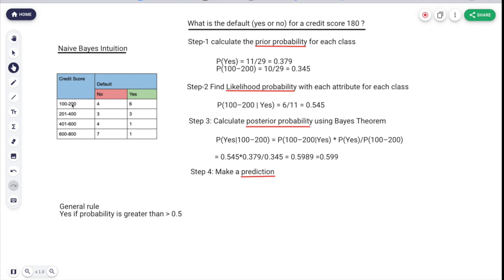For that, what we need to do is firstly calculate the prior probability. Step 1: if you don't remember the formula, you can just pause and see the formula again. We will calculate the prior probability of each class. P(Yes) will be 6 divided by 11, and P(100-200) is 6 plus 4, which is 10, divided by 20. So we have prior probability with us.